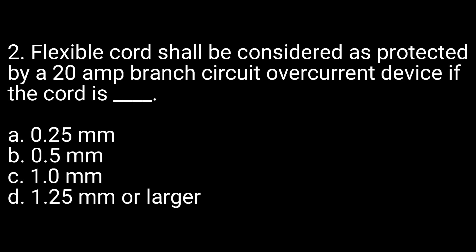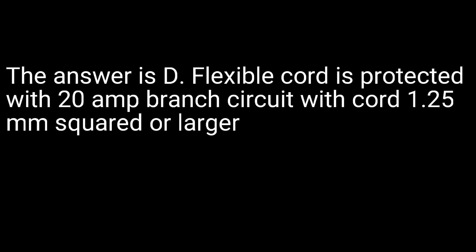Question 2. Flexible cord shall be considered as protected by a 20-amp branch circuit overcurrent device if the cord is: A. 0.5 millimeters. B. 0.5 millimeters. C. 1.0 millimeters. D. 1.5 millimeters or larger. The answer is D.